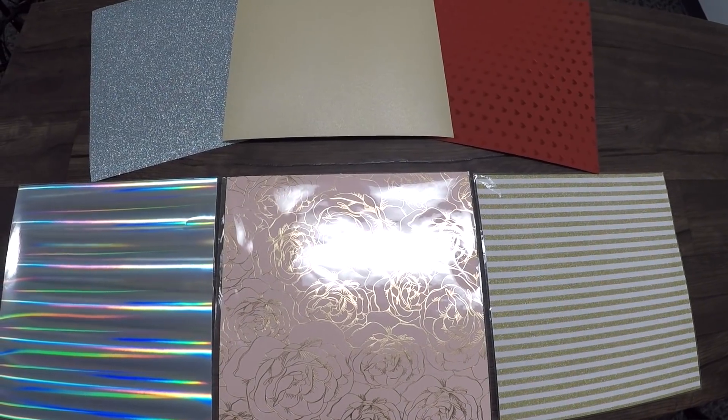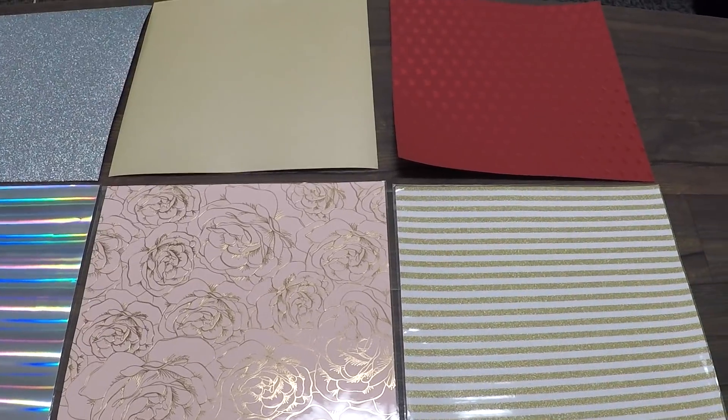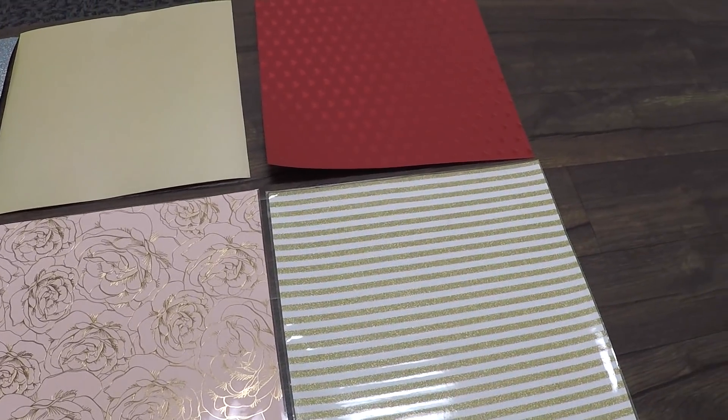The 43 degree blade comes standard with the drag knife and is good for a wide variety of materials up to 0.5mm thick like signed vinyl, construction paper, and the like.